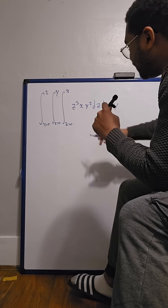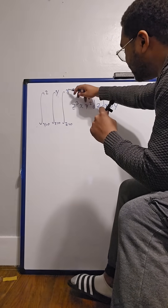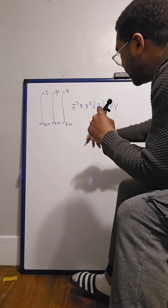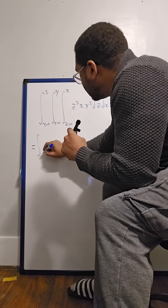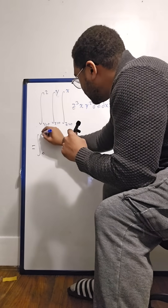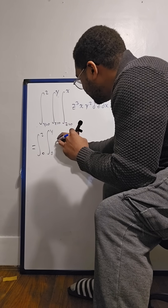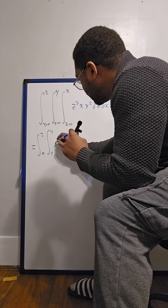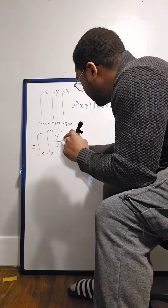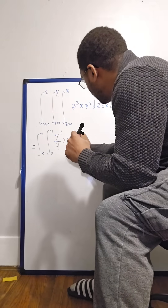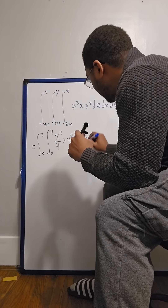Let's take our first integral here from z equals zero to z equals x. That will leave us with 0 to 2, 0 to y, x to the 4th over 4, x y squared dx dy.